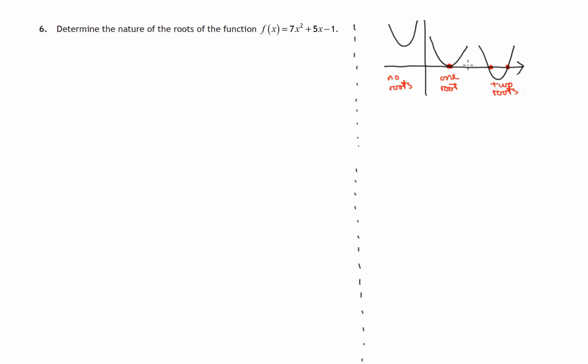Now how would we find the value of x where the graph of a function like this crosses the x-axis? Well on the x-axis the y value is zero. The value of 7x squared plus 5x minus 1 equals zero. So we'd need to solve f of x equals zero. For what values of x is 7x squared plus 5x minus 1 equals zero? And if we find these values then these are the roots.